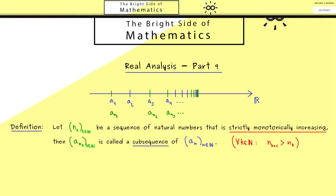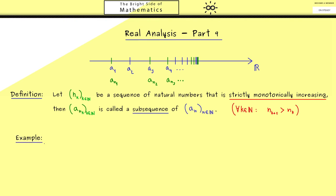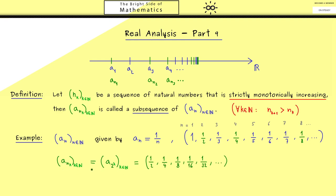Maybe it gets clear when we look at an example. For this let's take a sequence we already know, namely an is given by 1 over n. Now the question is what is the subsequence when we choose nk as 2 to the power k. Please note this is a possible choice for the sequence nk, because 2 to the power k is a sequence of natural numbers that is strictly monotonically increasing. Now this means in the original sequence here we will omit all the members that have an index that is not a power of 2. Therefore the first one should be 1 half, the next one 1 quarter, then we go to 1 over 8 and so on. Hence our subsequence a nk looks like this.